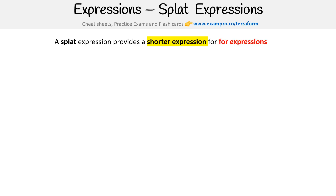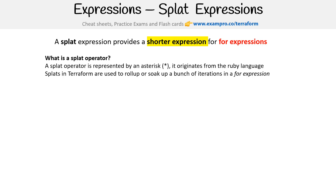We're taking a look at splat expressions, which provide a shorter expression for the for expression. A splat operator is represented by an asterisk. It originates from the Ruby language, and splats in Terraform are used to roll up or soak up a bunch of iterations in a for expression.